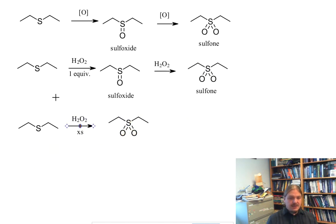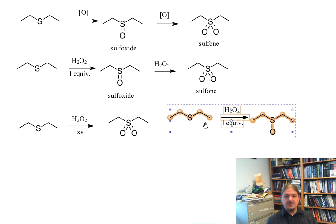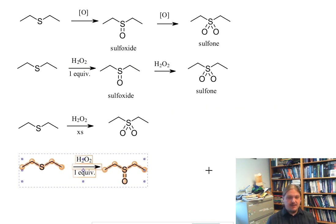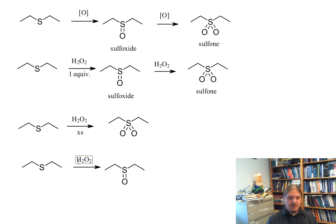Another reagent that can oxidize the sulfide to the sulfoxide and stop is sodium periodate, NaIO4. So here's an oxidizing agent that, if the reaction is treated gently, will stop at the sulfoxide.